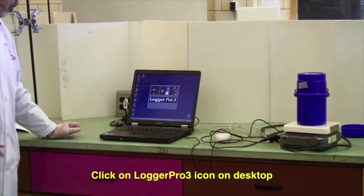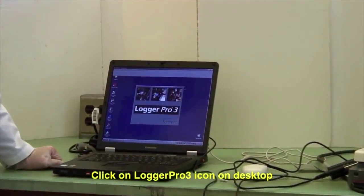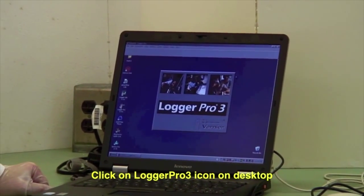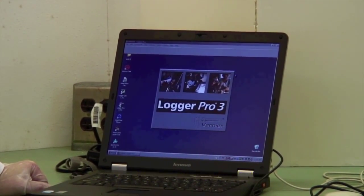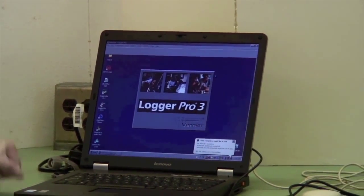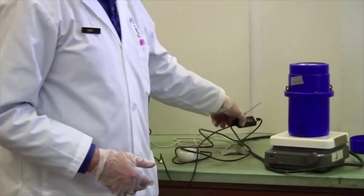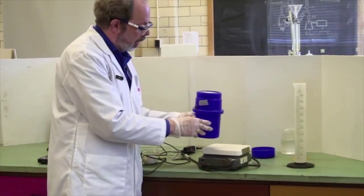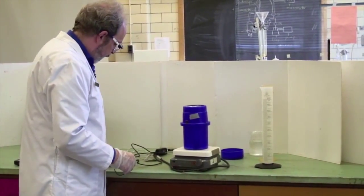So double click on that. It will fire up. And the software is smart enough to realize that you have plugged in a thermocouple as opposed to a pH probe. And it will pull up a temperature as a function of time graph ready to go. While we're waiting for that, let's talk about the calorimeter itself.